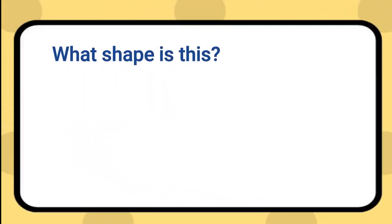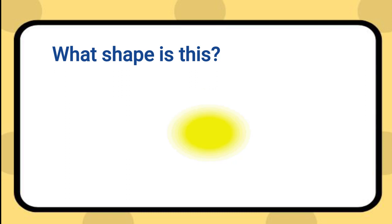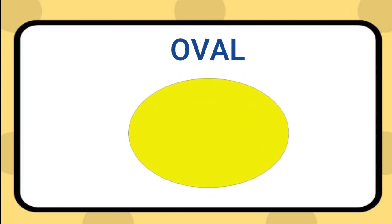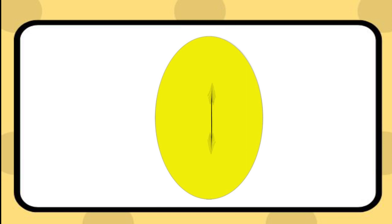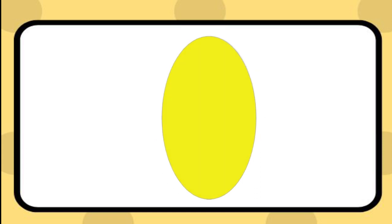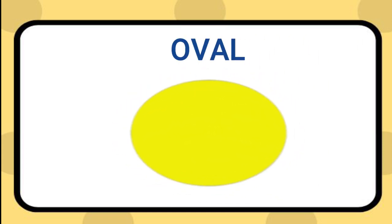What shape is this? This is an oval. An oval is like a circle, but it's slightly elongated. Oval.